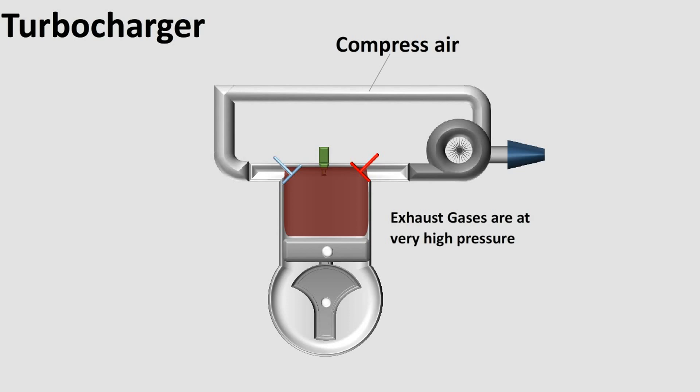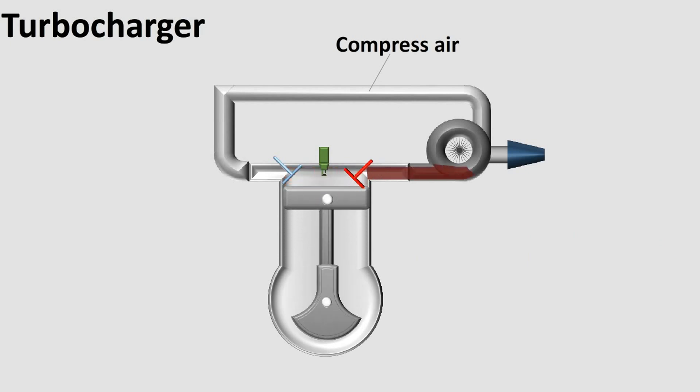The exhaust gases you have after combustion are at very high pressure and are also very hot. So when the valve opens, they leave the combustion chamber at very high speed. This kinetic energy of the exhaust gases is used to compress new air entering the engine.